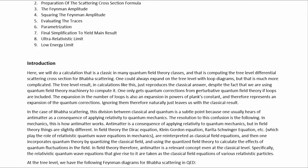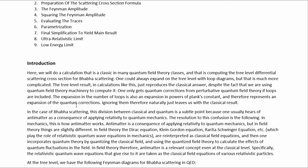The tree-level result in calculations like this just reproduces the classical answer, despite the fact that we are using quantum field theory machinery to compute it. One only gets quantum corrections from perturbative quantum field theory if loops are included. The expansion in the number of loops is also an expansion in powers of Planck's constant, and therefore represents an expansion of the quantum corrections. Ignoring them therefore naturally just leaves us with the classical result.